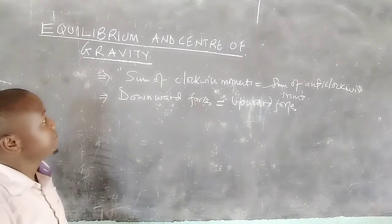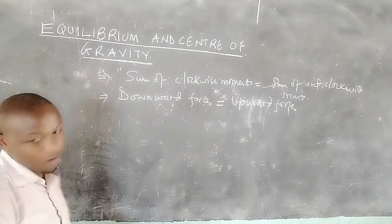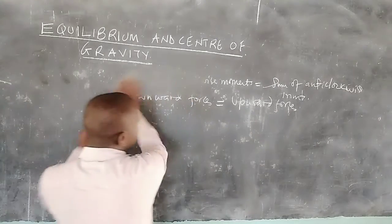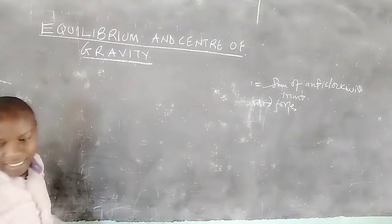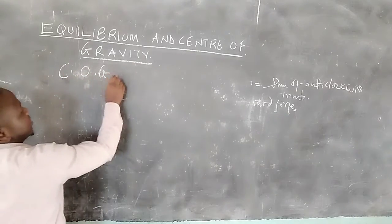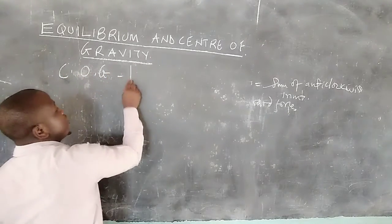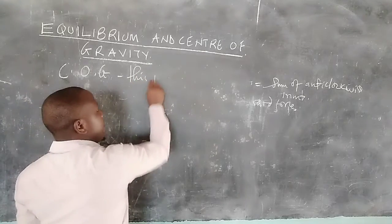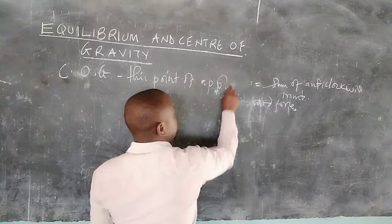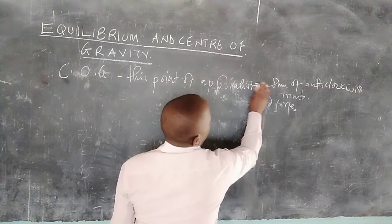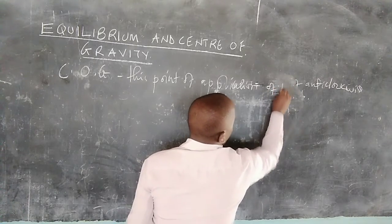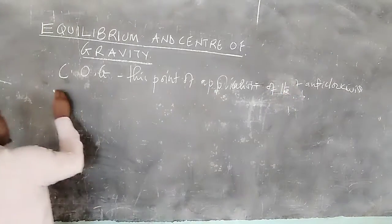With equilibrium comes what we call the center of gravity, mostly abbreviated COG. The center of gravity is the point of application of the resultant force — specifically, the resultant gravitational force acting on a body.